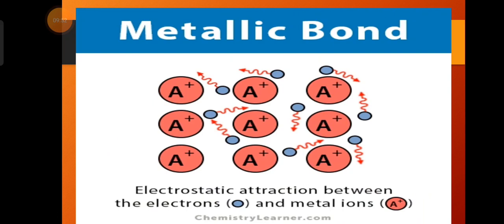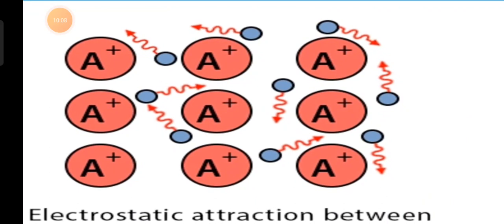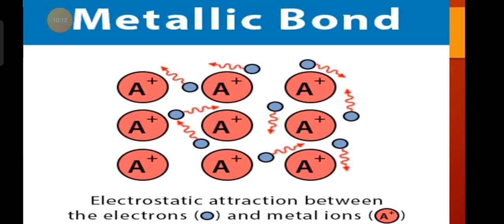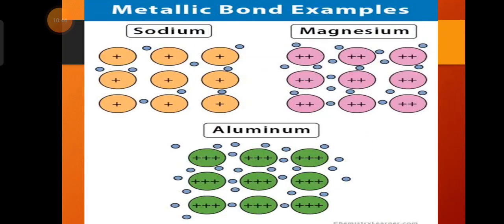For example, metal A loses an electron and gains a positive charge. The electrons removed from the outer shell move between the spaces of the metal atoms — that is why they are called mobile electrons. Due to these freely moving or mobile electrons, metals can conduct heat and electricity. These moving electrons carry heat and electricity from one point of the metal to another.